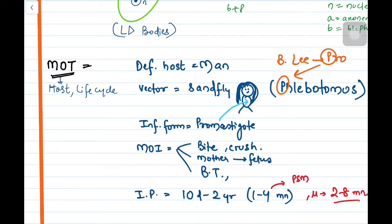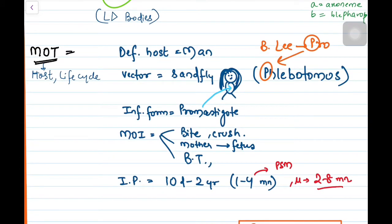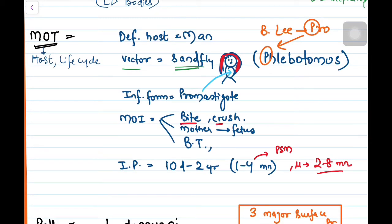Let us move to mechanism of transmission. Definitive host is always human, and vector is the female sand fly Phlebotomus. Inside it will be promastigote form in its proboscis which it will inject into human. Through bite, or if we crush it on skin, or mother to fetus transfer is also possible, or blood transfusion. The incubation period is ten days to two years, approximately one to four months. According to PSM, if microbiology, it is two to eight months.